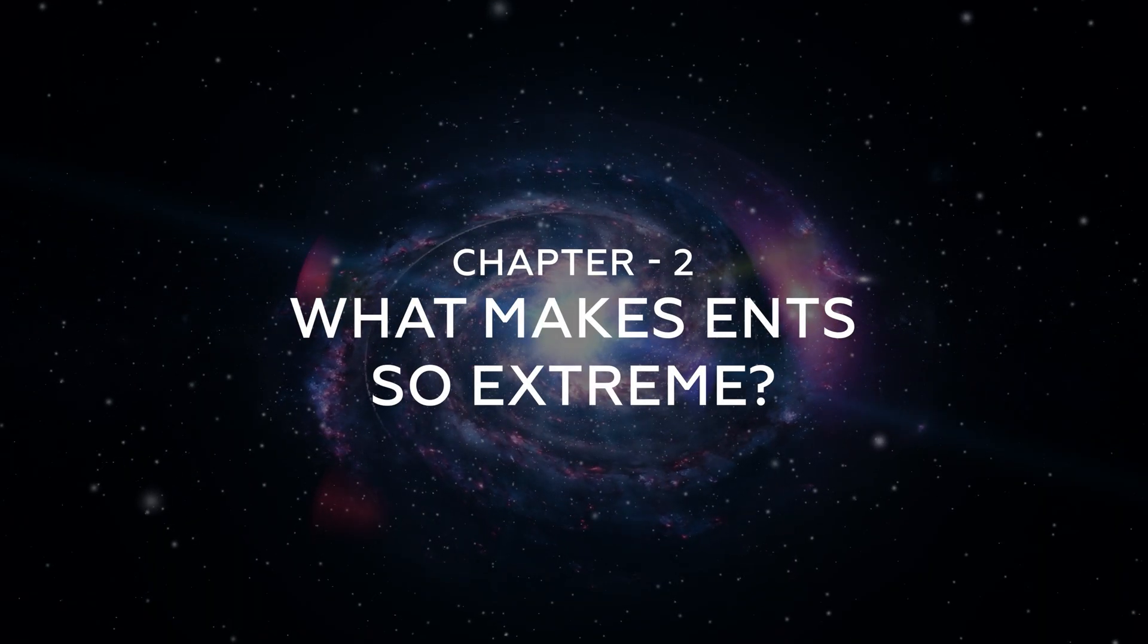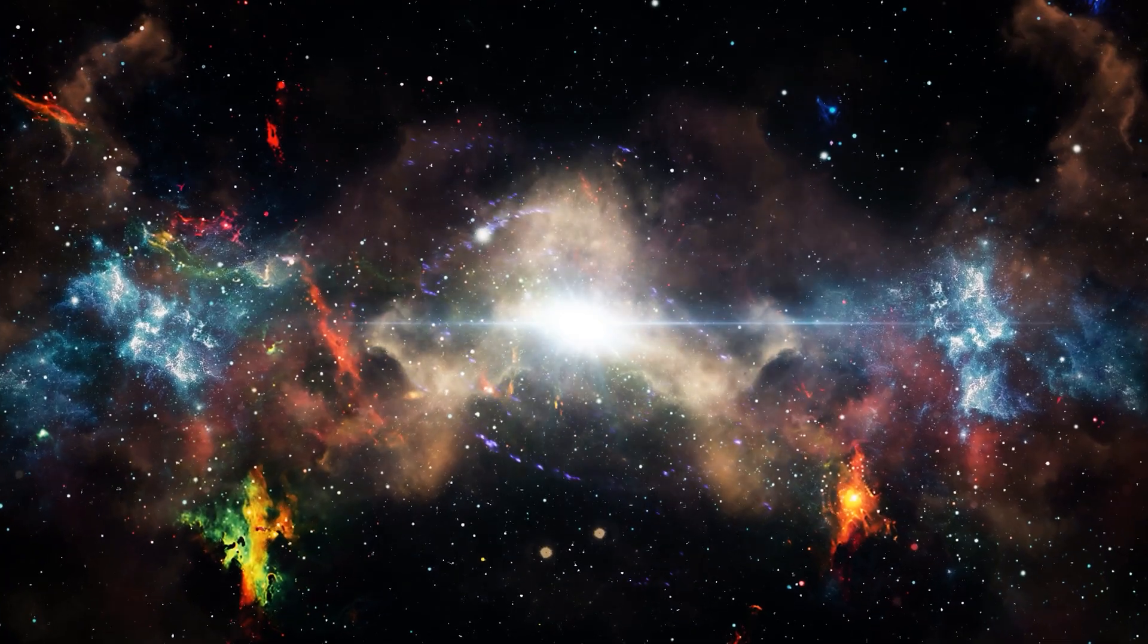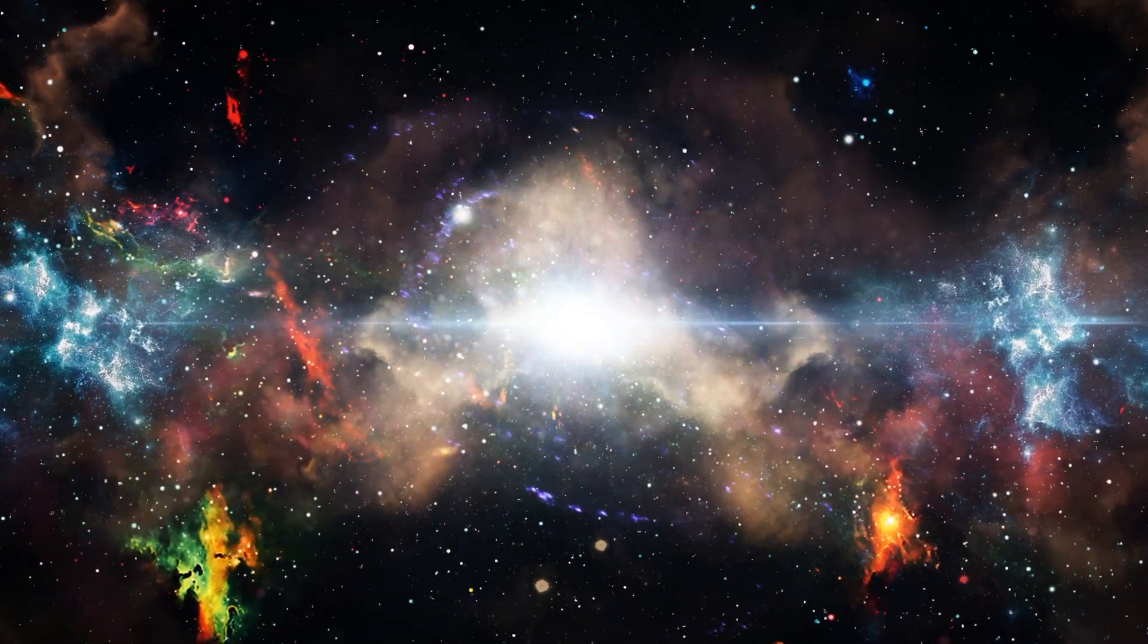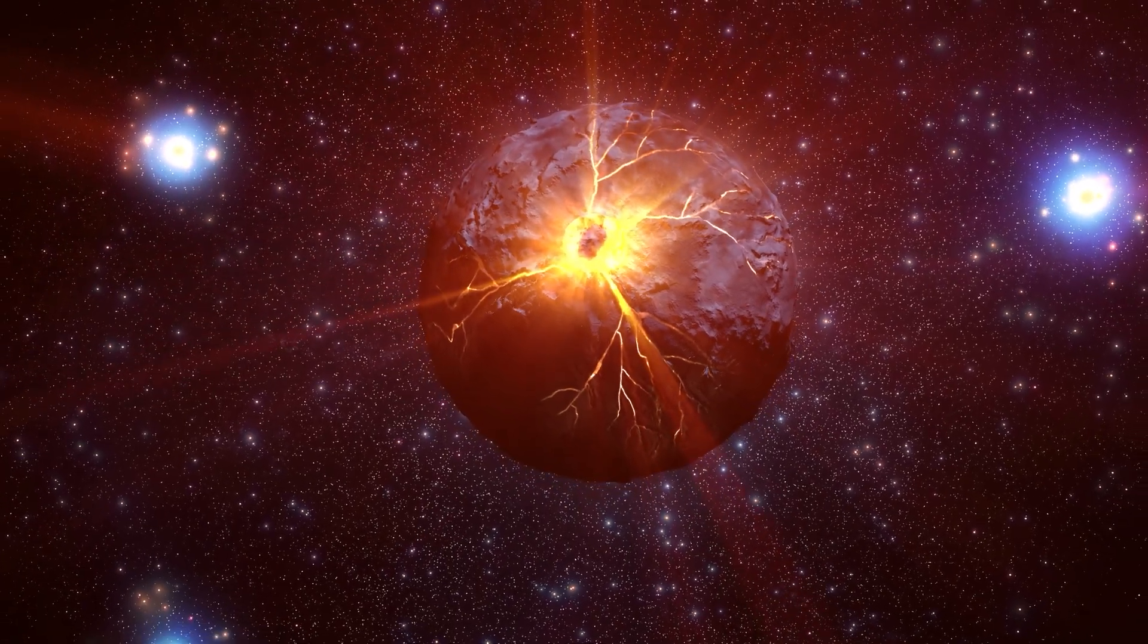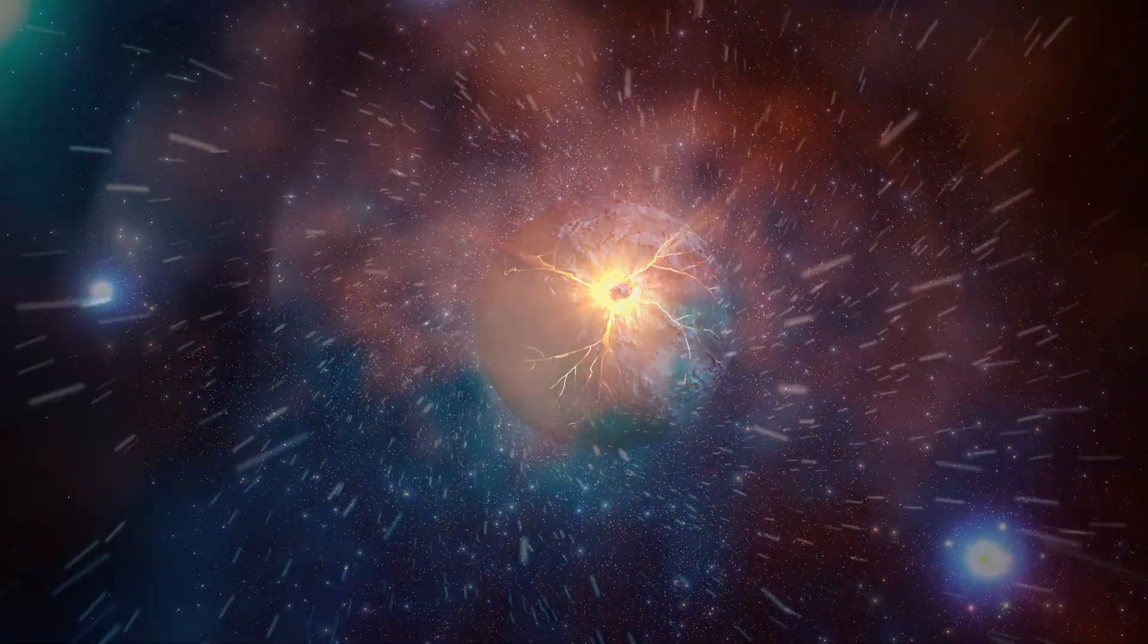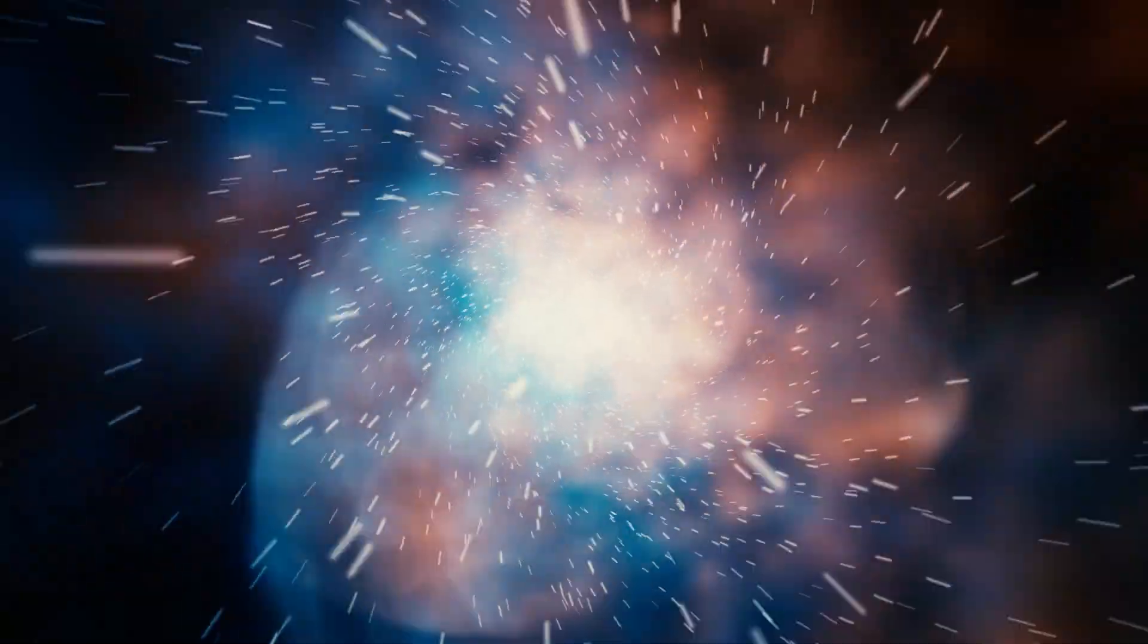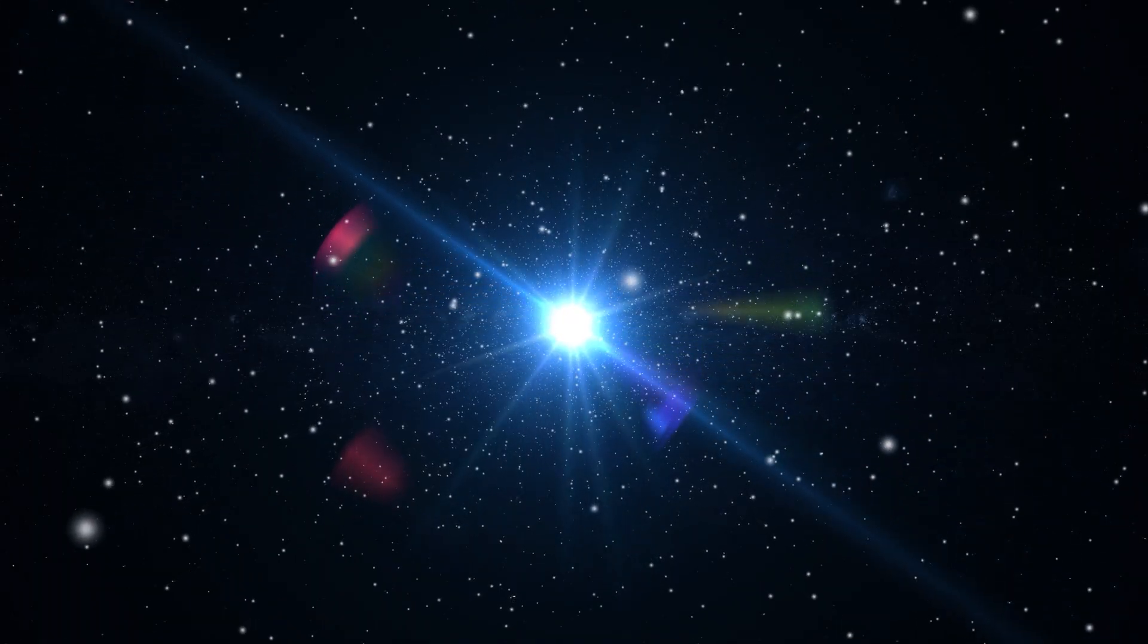Let's break this down. We've seen big explosions in space before: supernovae, gamma-ray bursts, even tidal disruption events when stars fall into black holes. So what exactly sets these new extreme nuclear transients, ENTs, apart? It's not just about brightness, it's about scale, duration, and location. ENTs don't flash and fade, they linger for years. In astronomical terms, that's like a fireworks show that never stops.